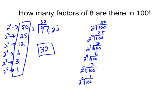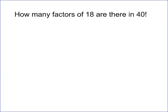The last problem asks: how many factors of 18 are there in 40 factorial? Now 18 equals 2 times 3 squared. Since there will always be plenty of 2's, we need to focus on how many 3-squared groups there are. This problem is actually the same as asking how many factors of 9 are in 40 factorial — the 2's will always be available.